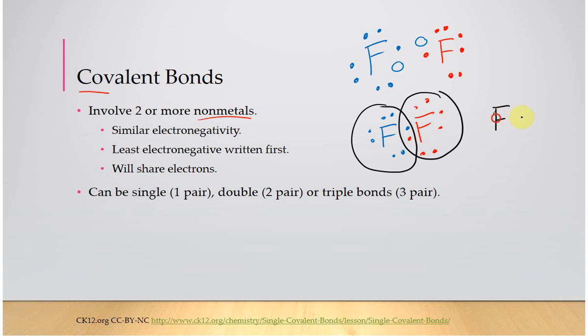And so a lot of the time you're going to see this written as like a bond with just a dash. Sometimes they'll put the valence electrons around, sometimes they won't.